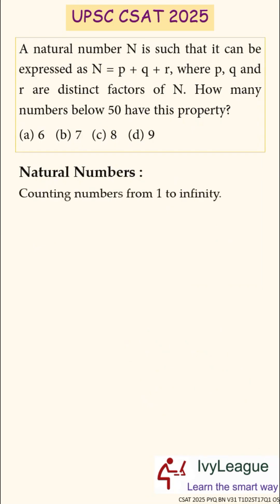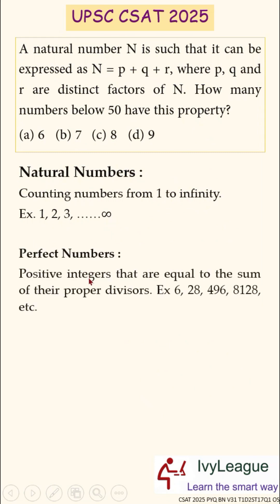Natural numbers are counting numbers from 1 to infinity. For example 1, 2, 3 up to infinity. Perfect numbers on the other hand are positive integers that are equal to the sum of their proper divisors. Examples of perfect numbers are the number 6, 28, 496, 8128 etc.